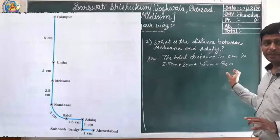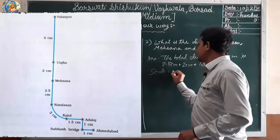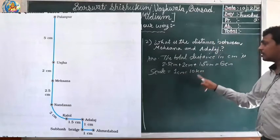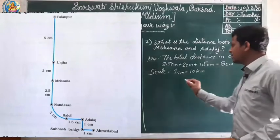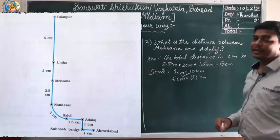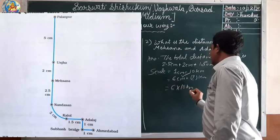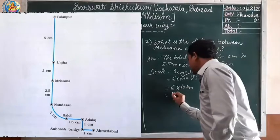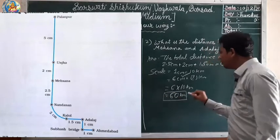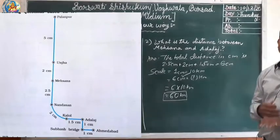This distance has been measured in centimeter. Now we convert into kilometers using the scale: 1 centimeter equals 10 kilometers. So 6 centimeters equals how many kilometers? We just multiply 10 by 6: 6 multiplied by 10 equals 60 kilometers. The distance between Mahsana and Adalaj is 60 kilometers.